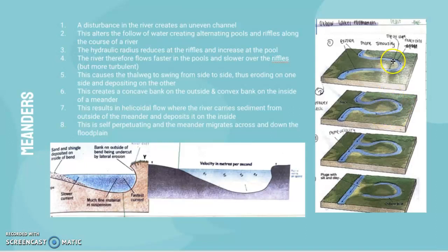On the slip-off slope you get a lot of deposition, whereas at the river cliff you get a lot of erosion. This is self-perpetuating and the meander migrates across and down the floodplain. This keeps narrowing and becoming more sinuous. Then you get this meander neck that eventually joins up, and you get an increase in velocity here because the flow is straight rather than having to go around this relatively inefficient curve.